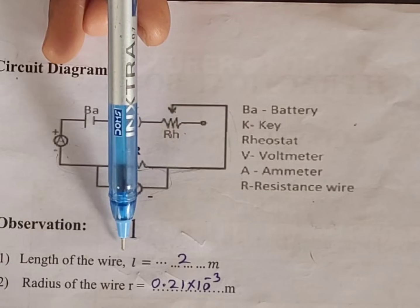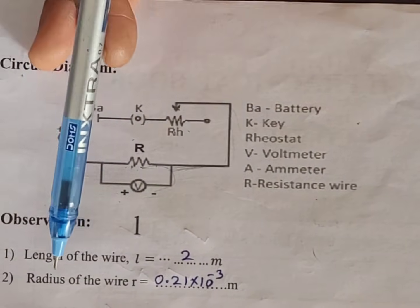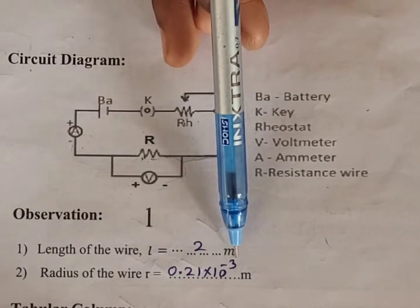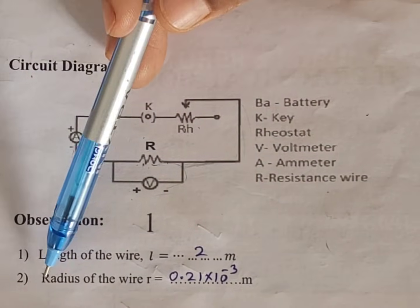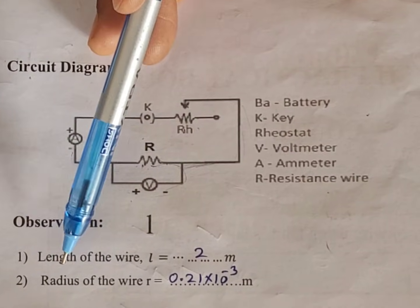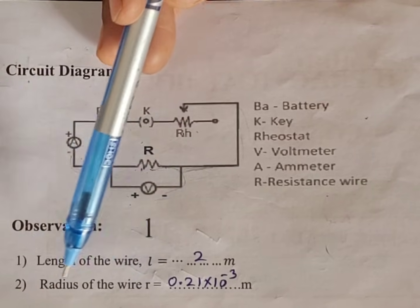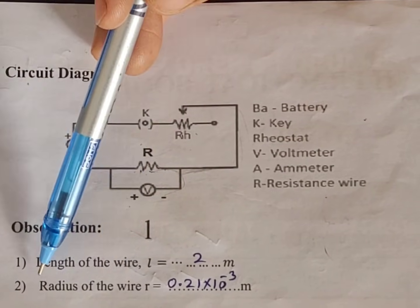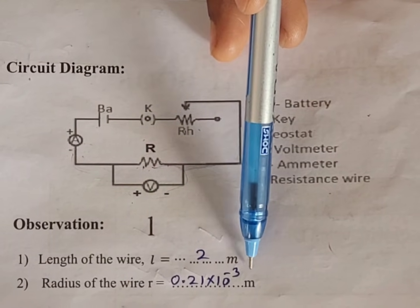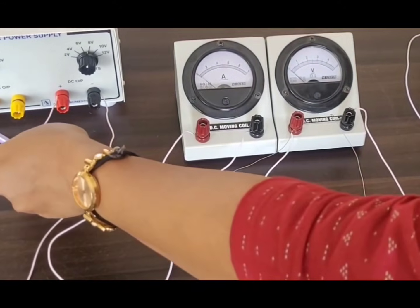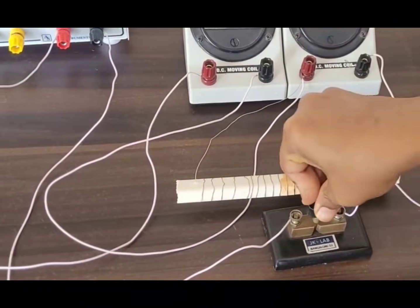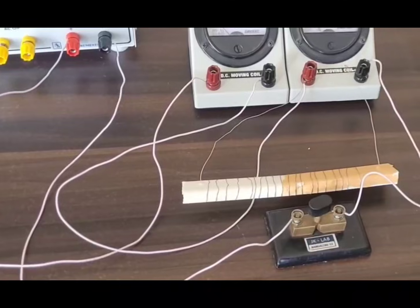Come to the observations. Length of the wire: L equal to 2 meters. The radius of the wire is given as 0.21 into 10 raise to minus 3 meters, obtained using a screw gauge. By using the screw gauge we get the diameter, and dividing by 2 gives the radius: r equal to 0.21 into 10 raise to minus 3 meters. Let us switch on the power supply — now the current starts to flow.